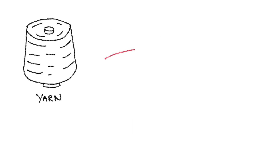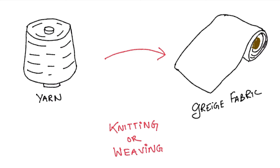By using the yarn, the fabric is made. The process of knit fabric making is called knitting, and the process of making woven fabric is called weaving. In both the processes, the yarn is intertwined to form the fabric. But the arrangement of the yarn is different in knits and woven fabric.